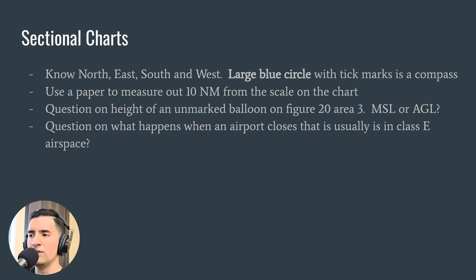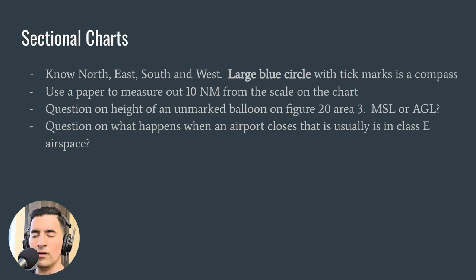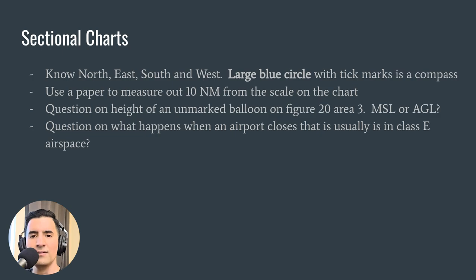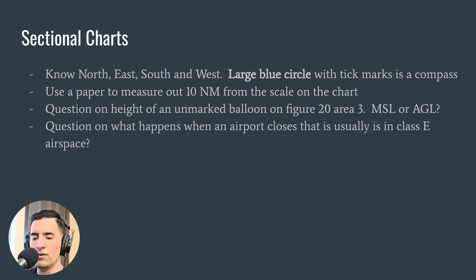Use a piece of paper to measure out 10 nautical miles from the scale on the chart — the scale is on top of most sectional charts. You'll get questions like 'what airspace are you in, three nautical miles southwest of this airport?' If you guesstimate, you could end up in the wrong airspace. At three nautical miles you might be in class C, but at 10 nautical miles you might be in class D. Use your paper and pencil — they provide both.